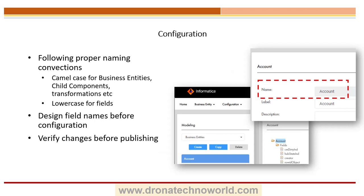Another important thing about Business Entity configuration: make sure you document all your fields as well as Business Entities — either in a spreadsheet, PowerPoint, or Word document — before actually configuring. You will be able to catch mistakes like spelling errors or abbreviation issues during the documentation phase itself. If you need to correct mistakes in the provisioning tool, you have no direct way to do so; you have to delete those components and create them again. As you can see in the screenshot on the right-hand side, the name field cannot be changed — you can change the label, but not the name.